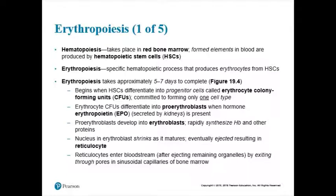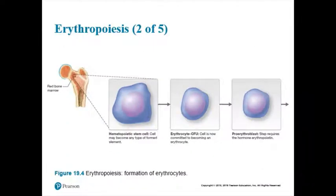We're in the red bone marrow. You start off as that hematopoietic stem cell that can become any type of blood cell. Then right away it picks the red blood cell pathway by becoming that erythrocyte colony-forming unit — locking itself into only becoming an erythrocyte. After the erythrocyte colony-forming unit step, it becomes that pro-erythroblast with the help of erythropoietin. Then after the pro-erythroblast stage, you'll become that erythroblast — the immature red blood cell.